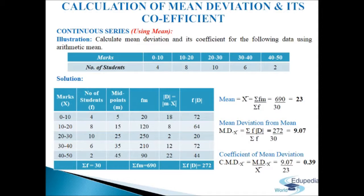Midpoints: 5 for 0–10, 15 for 10–20, 25 for 20–30, 35 for 30–40, 45 for 40–50. Fourth column f·m: 20, 120, 250, 210, 90, giving sigma fm = 690. Mean = sigma fm / sigma f = 690 / 30 = 23. Fifth column d = m − mean.